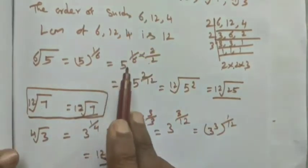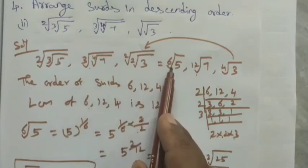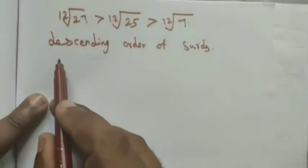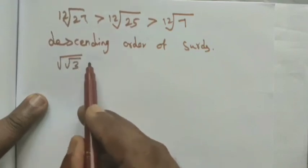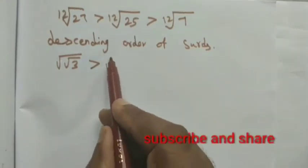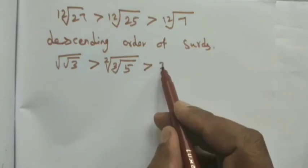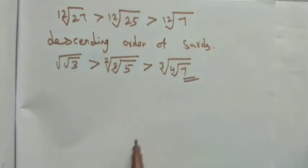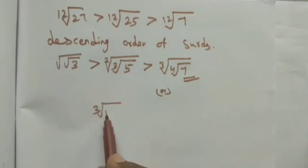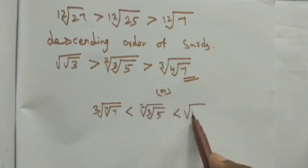So: 4th root of 3 is nothing but square root of square root of 3. Then 12th root of 7 is nothing but cube root of 4th root of 7. And 6th root of 5 is nothing but square root of cube root of 5. Therefore the descending order is: 12th root of 27 — which is square root of square root of 3 — is greater than 12th root of 25 — which is square root of cube root of 5 — is greater than 12th root of 7 — which is cube root of 4th root of 7.